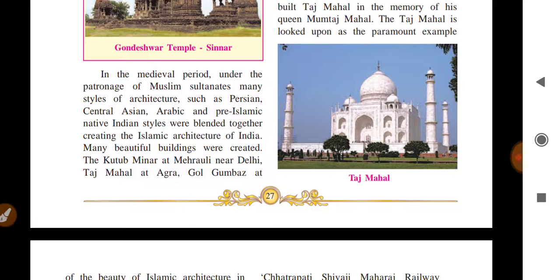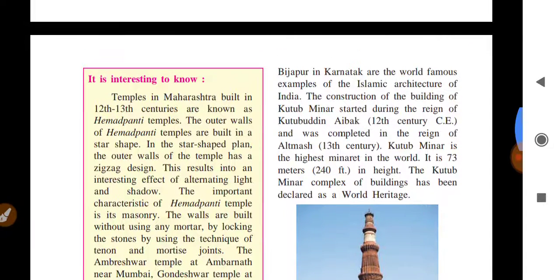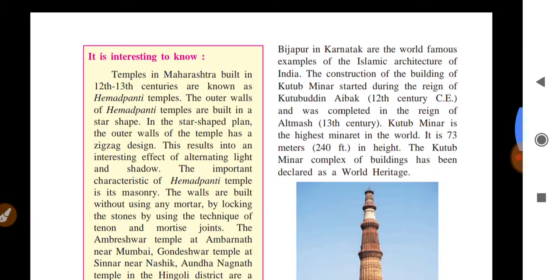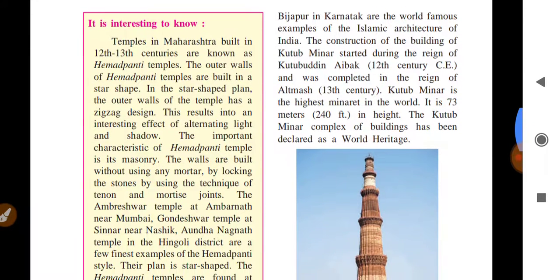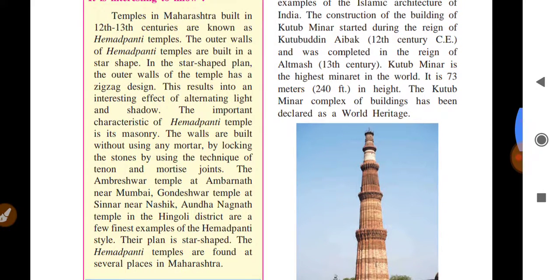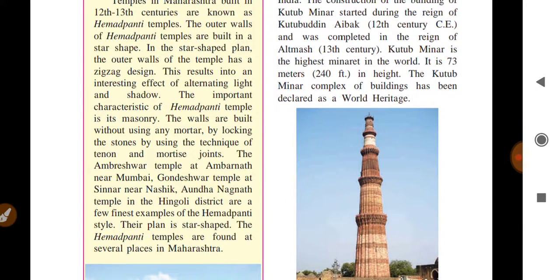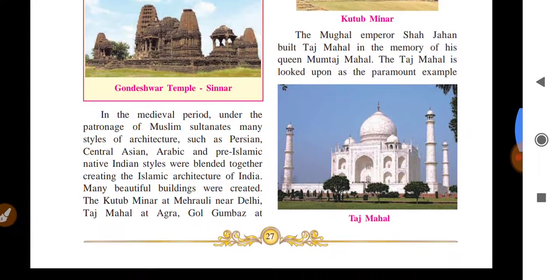Famous examples of Islamic architecture in India include Qutub Minar in Mehrauli, Delhi; Taj Mahal in Agra; and Gol Gumbaz in Bijapur, Karnataka — all world-famous. Construction of Qutub Minar began in the 12th century, commissioned by Qutbuddin Aibak, and was completed in the 13th century during Iltutmish's reign. Its height is the tallest in all of India — nearest to 240 feet. The Qutub Minar complex has been declared a World Heritage Site.